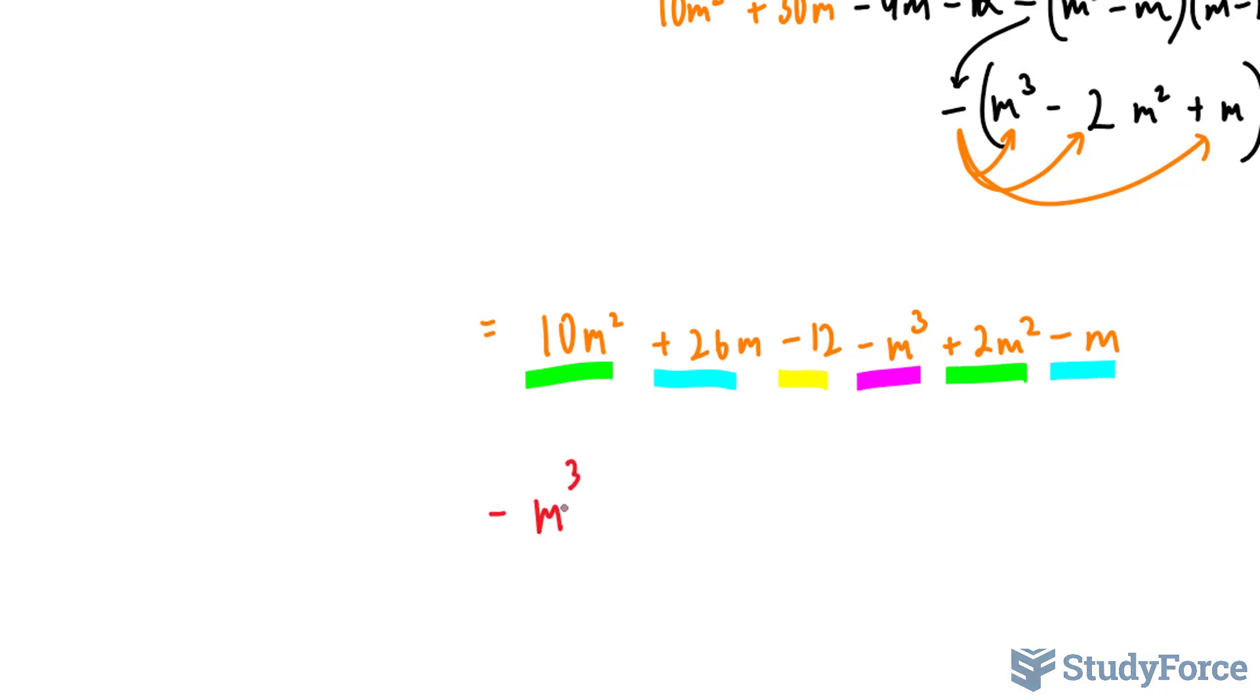negative m cubed, combining the greens, plus 12m squared, combining the blues, plus 25m, and finally minus 12.